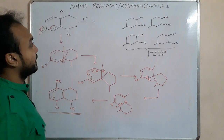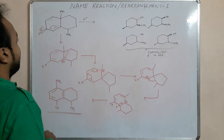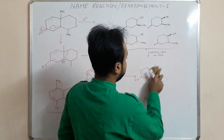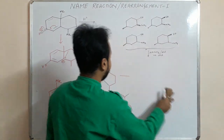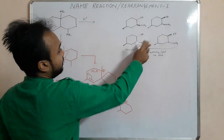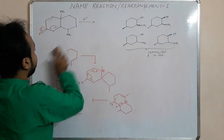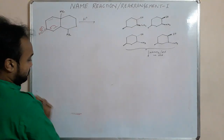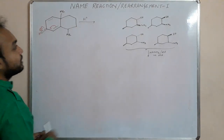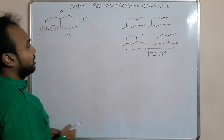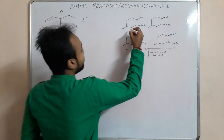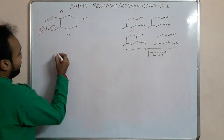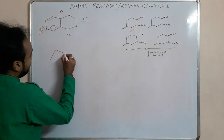Now let's move to the next example, which is based on diazonium salts. We are dealing with NaNO2/HCl to form a diazonium salt, and then a rearrangement takes place. We are given some substituted cyclohexane rings. I'll take the first one and write it in chair form.